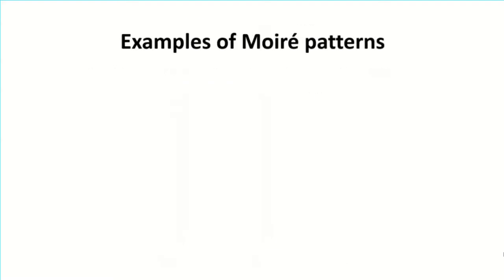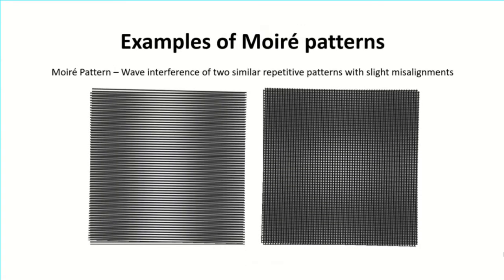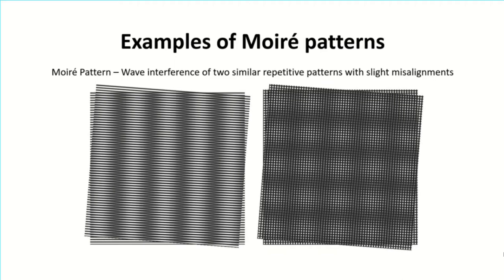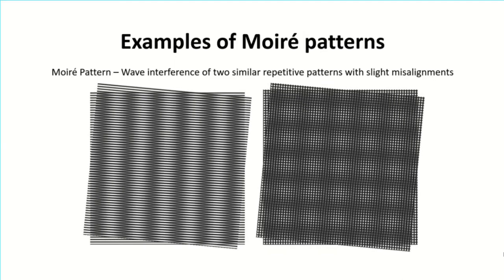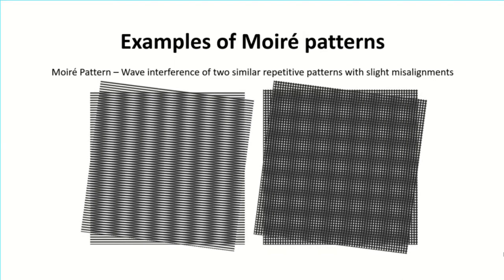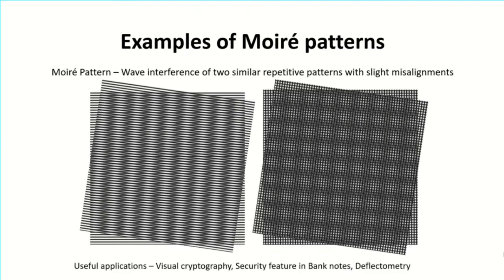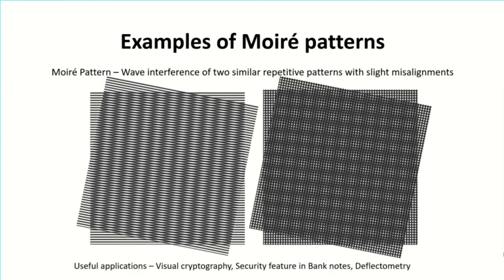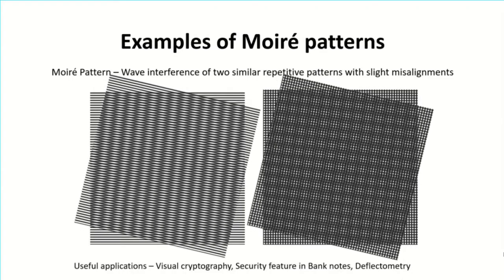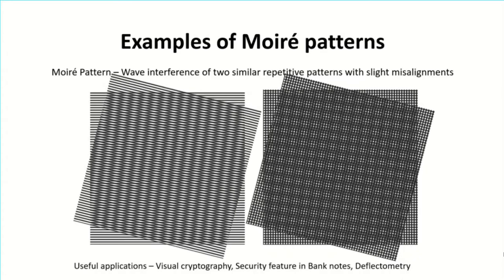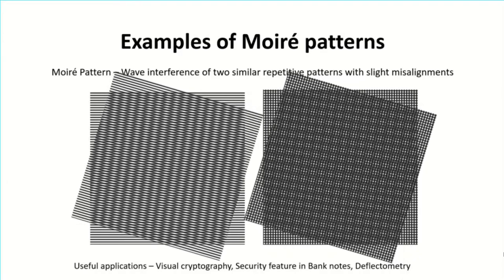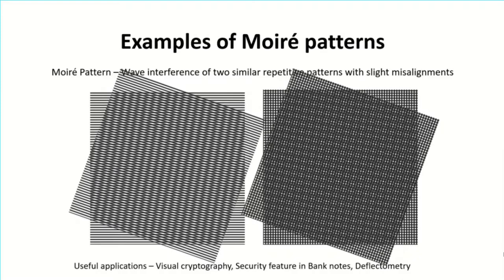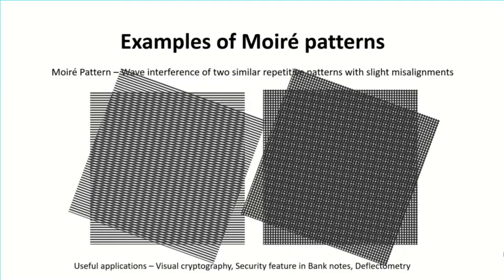Moiré is derived from the French word for watered fabric. While photographers work on reducing the effects of moiré, there are many useful applications too. For example, it is a technique in visual cryptography which allows visual information to be encrypted in such a way that its decryption does not require a computer. It is also used as a security feature in banknotes to avoid duplicity and forging.